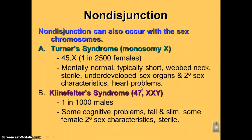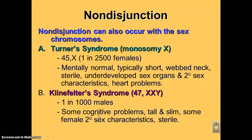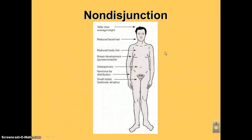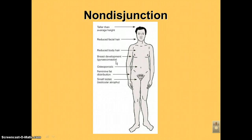Klinefelter syndrome is 47,XXY — an extra sex chromosome. Because they have a Y chromosome, they're male. It happens in about one in 1000 males. They do have some cognitive problems and learning disabilities. They're typically very tall and slim, and because of the extra X chromosome they can show some female secondary sex characteristics like breast development and widening of the hips. These secondary characteristics vary greatly between individuals.